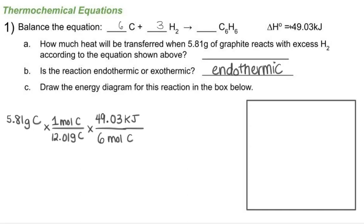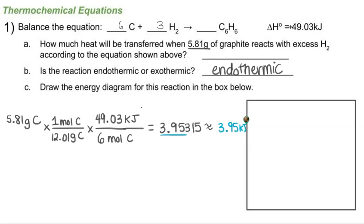I'll calculate: 5.81 times 49.03 divided by 12.01 divided by 6. That gives me 3.395315... I need to round to three significant figures because the problem gives three sig figs, so my final answer is 3.95 kilojoules.